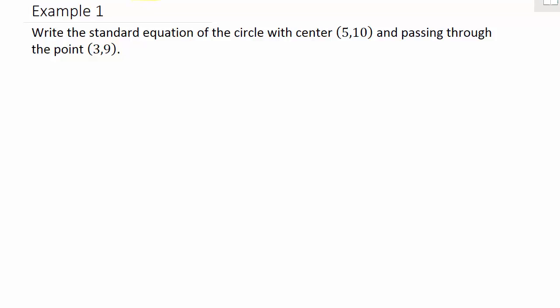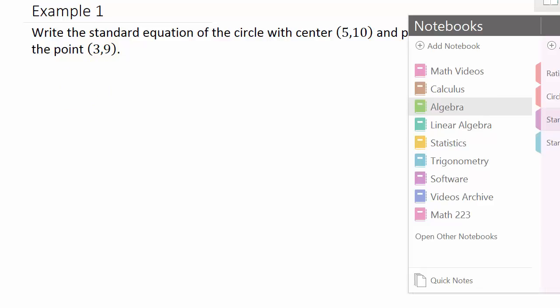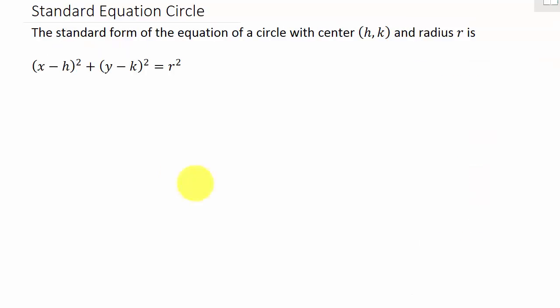In this video we are going to write the standard equation of a circle. The standard form of the equation of a circle with center (h, k) and radius r is: x minus h squared plus y minus k squared equals r squared.